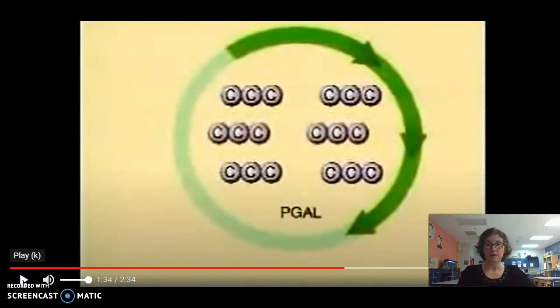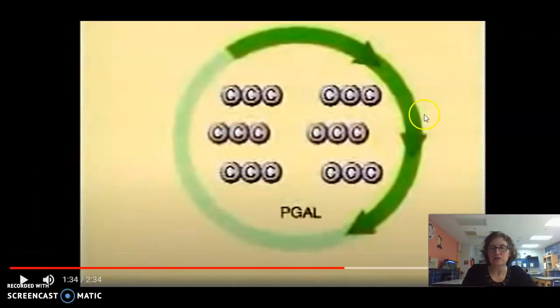PGAL stands for phosphoglyceraldehyde. It also is called G3P, which you might have seen in your textbook. It just means a three-carbon carbohydrate that has a phosphate sticking onto the end of it. So what's going to happen next? Now the reduction phase is over.